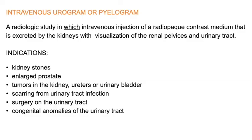Now let's talk about the most important contrast X-ray study — in the case of the urogenital system, that is the intravenous urogram, or IVU. It is a radiology study in which intravenous injection of radiopaque contrast is used. We use a positive iodine contrast, and in this case we use urographic contrast medium, which is excreted by the kidneys to visualize the renal pelvis and urinary tract.